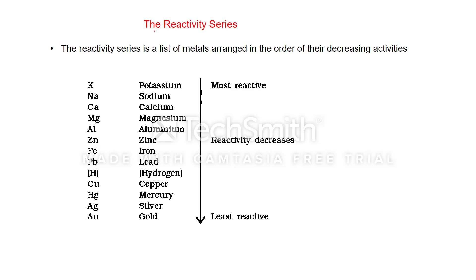On the basis of displacement reactions and all the reactions discussed, metals can be arranged in order of decreasing reactivity. This list is known as the reactivity series. The reactivity series is a list of metals arranged in order of their decreasing activity.